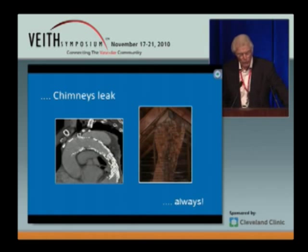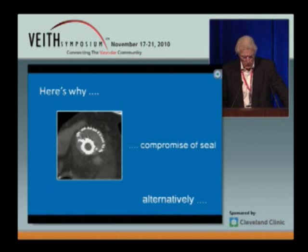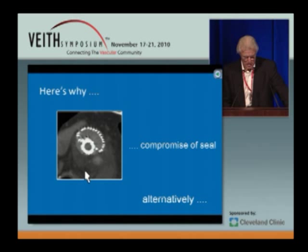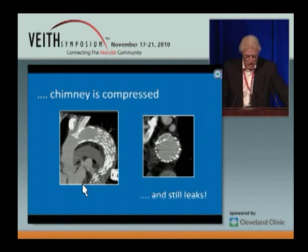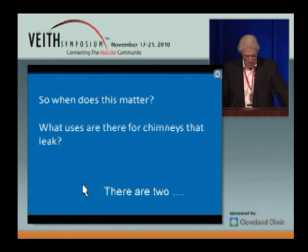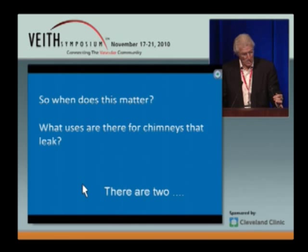Why? Well, again, Martin pointed out that there are gutters alongside the chimneys. You either have a situation where the chimney is compressing the main stent graft with gutters along the side and a leak, or alternatively, the chimney itself is compressed and there's still a leak. So really the issue is: when does the leak matter, and what are the uses for chimneys that leak?